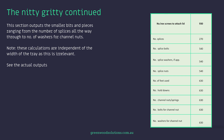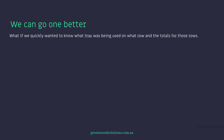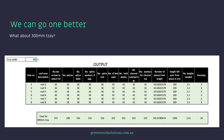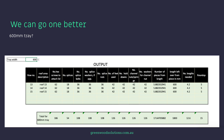And in this slide you can see the actual outputs. Now we can go one better — what if we quickly want to know what tray was being used on what row, and the totals for those rows? For example, 450 mil tray. For this we use data validation, the drop-down list, filter, and the SUM function. You can see from this slide that row numbers 9, 10, 11, and 12 are using the 450 mil tray, and you can see the totals at the bottom. What about 300 mil tray? In this case row numbers 3, 4, 5, 6, 7, and 8 are using the 300 mil tray. And for 600 mil tray, row numbers 13, 14, and 15.